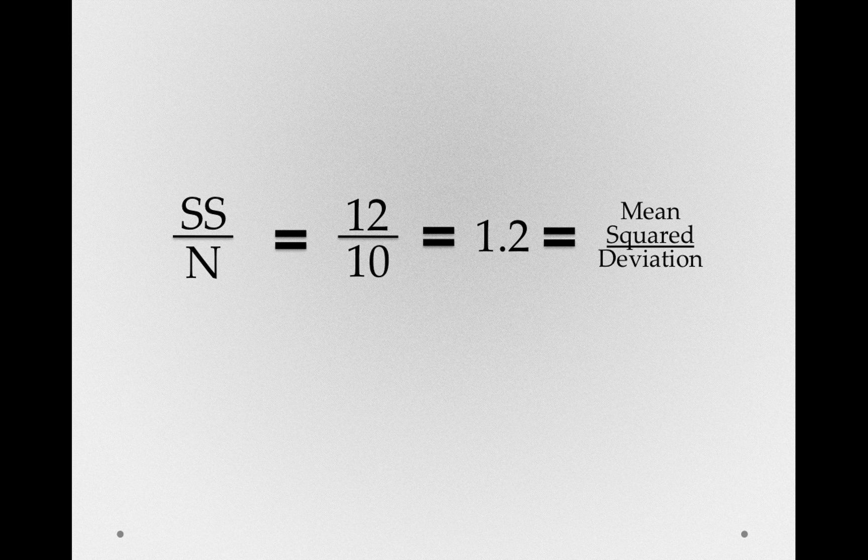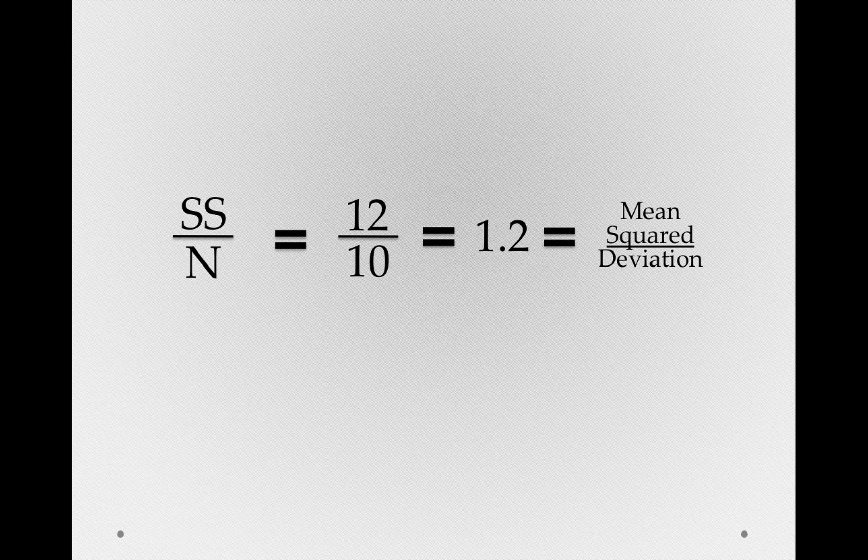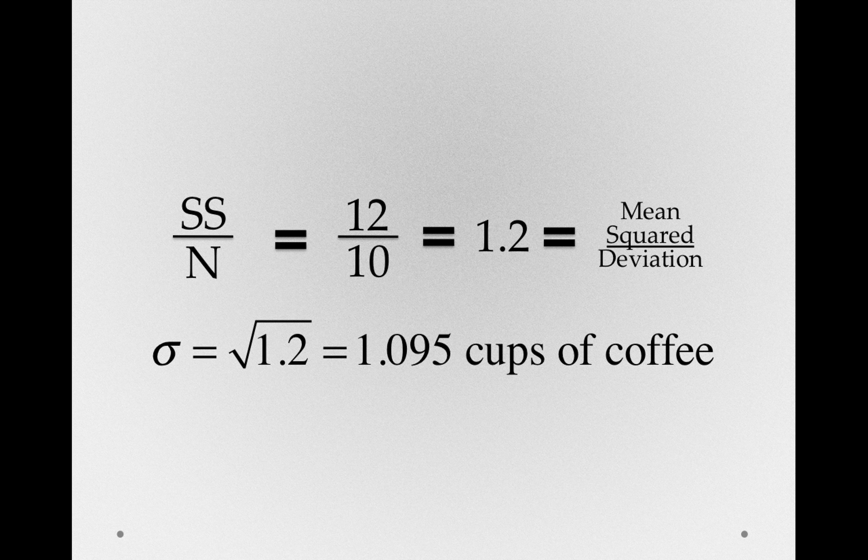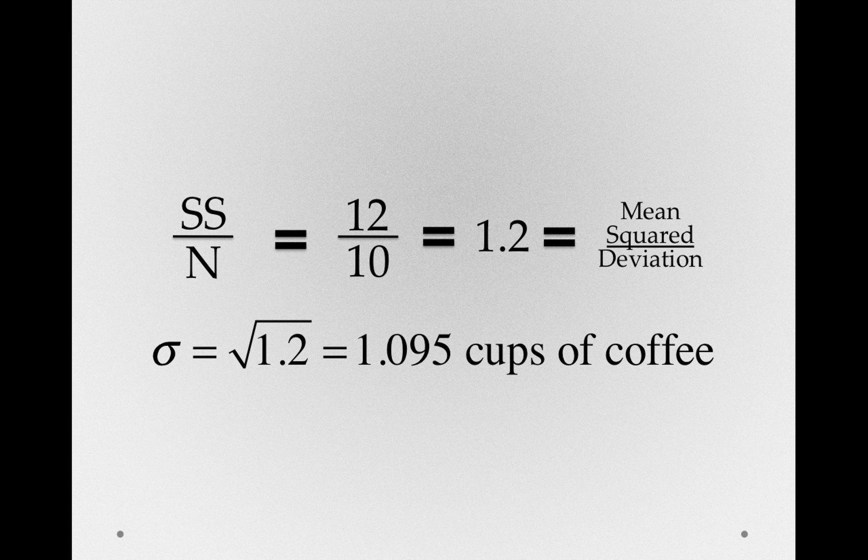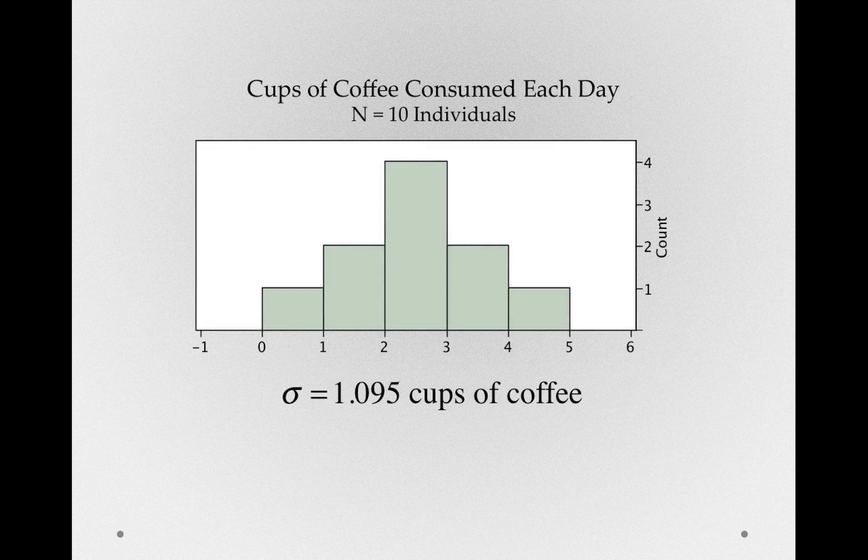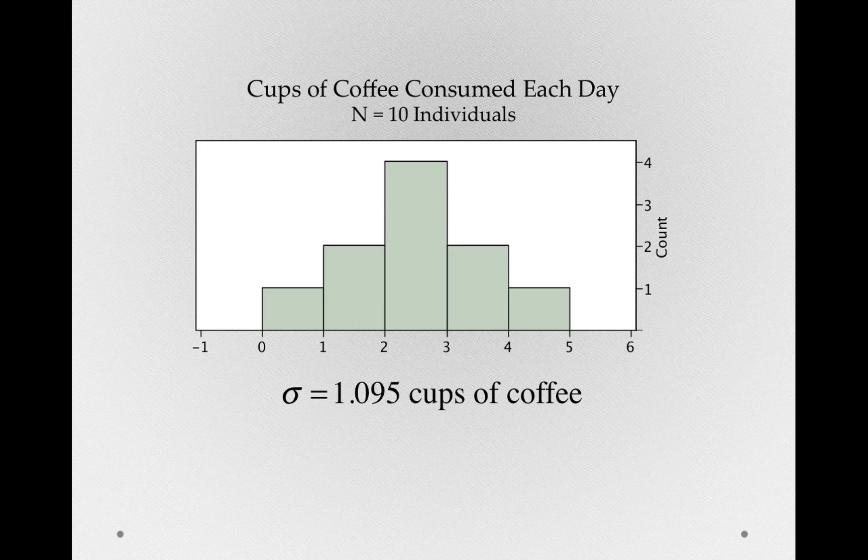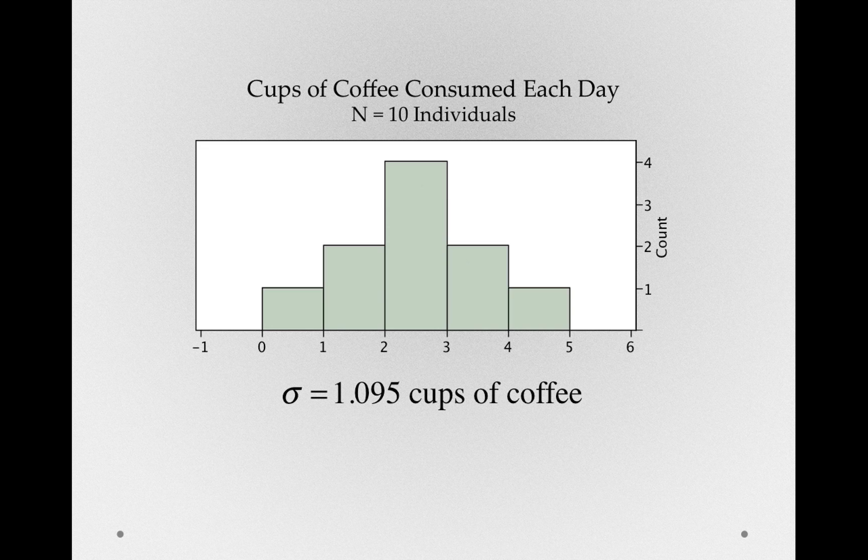So going back, our 1.2, or our mean squared deviation, if we take the square root, we find out that the standard deviation for that population was 1.095 cups of coffee. And if we go back to the histogram, this should square with our visual intuition. The distance of these points to the center, on average, is about 1.095. Again, remember, it's not really the average distance, but rather the square root of the mean squared distance.